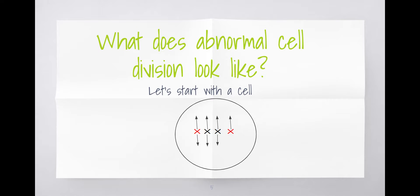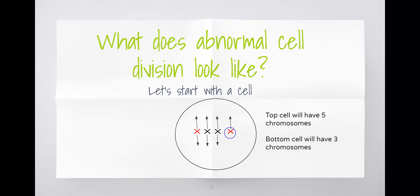You can see the first three are dividing evenly - one sister chromatid going up and the other going down. But the final chromosome is not splitting; the sister chromatids are staying together and going up into the next cell. This is where abnormal meiosis happens. The top cell will have five chromosomes and the bottom cell will only get three. After meiosis, cells should divide equally and share chromosomes evenly in each new cell.